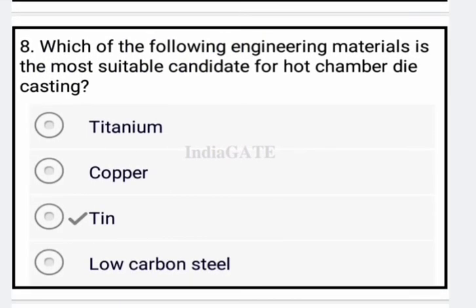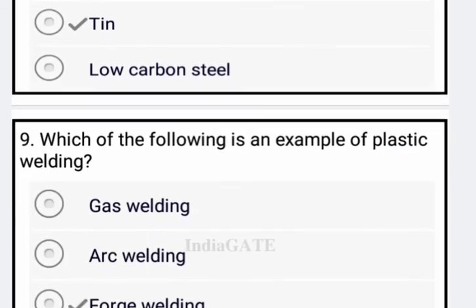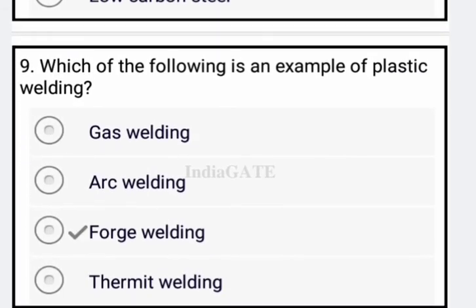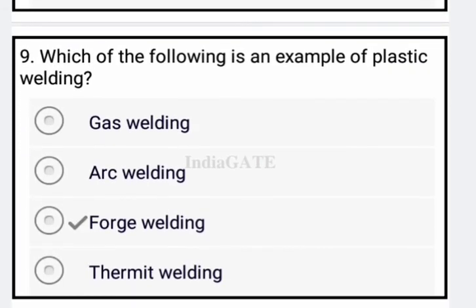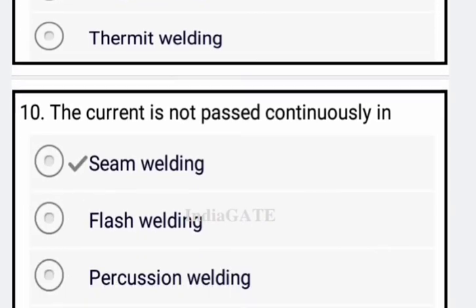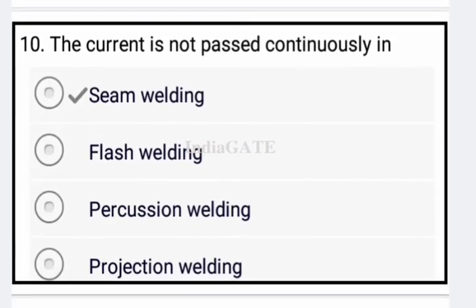Next: which of the following engineering materials is the most suitable candidate for hot chamber die casting? Tin is your correct answer — option C is correct. Next: which of the following is an example of plastic welding? Force welding is the example of plastic welding — option C is your correct answer.